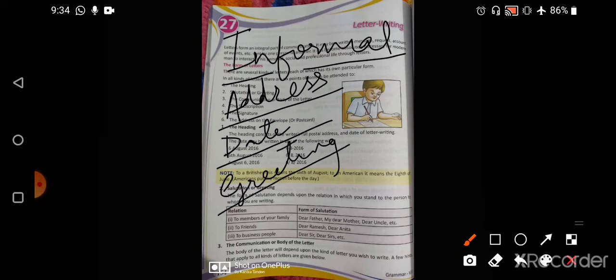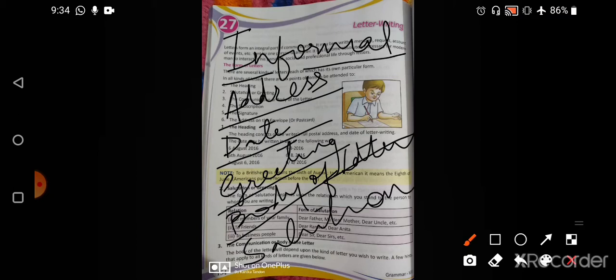The greetings means like dear mother, dear father or anything. Then we write body of the letter, the matter whatever we want to. And the last one is the salutation. Salutation is your loving daughter and your name, your loving brother, your name, things like these. This is how we write an informal letter.